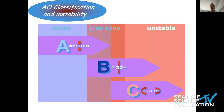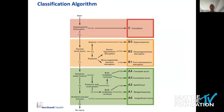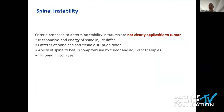Classification systems have evolved over the years. The AO classification of instability — with Jens Chapman involved as a leading trauma surgeon — is great for trauma, categorizing compression, distraction, or rotational injuries. However, when it comes to tumors, the mechanism is not the same. Tumors don't involve normal bone subjected to major trauma; they usually involve the bone while leaving ligaments intact. And unlike traumatic fractures that may heal with a brace, tumor-related fractures with ongoing tumor growth or radiation may not improve. So spinal tumor instability is different from traumatic instability.